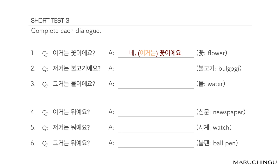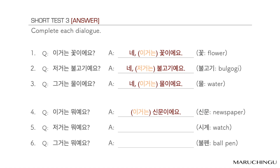1번: 이거는 꼬치예요? — 네, 꼬치예요. 2번: 저거는 불고기예요? — 네, 불고기예요. 3번: 그거는 물이에요? — 네, 물이에요. 4번: 이거는 뭐예요? — 신문이에요. 5번: 저거는 뭐예요? — 시계예요. 6번: 그거는 뭐예요? — 볼펜이에요.